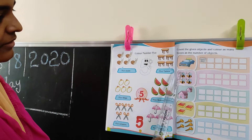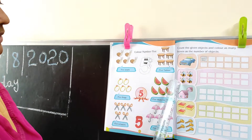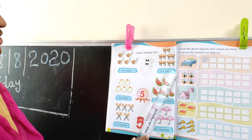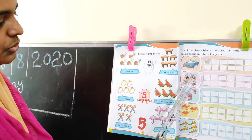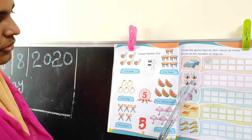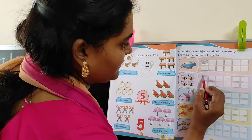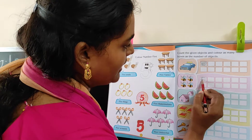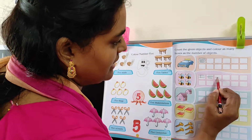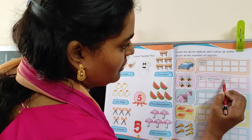Next one. What is this, children? Honeybees. How many honeybees are there? Count. One, two, three, four. You color four boxes. One, two, three, four.